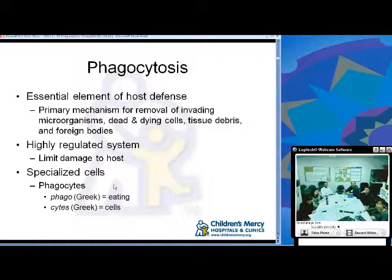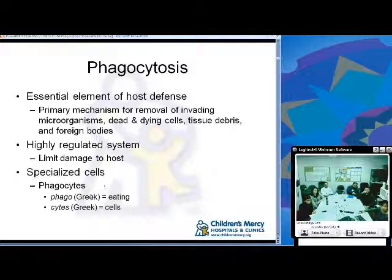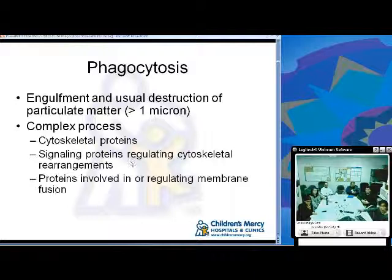Phagocytosis is an essential element of host defense. It's the primary mechanism for removal of invading microorganisms, dead and dying cells, tissue debris, and foreign bodies. It's highly regulated so that there's very limited damage to the host, and it involves specialized cells called phagocytes — phago for eating, cytes for cells. The definition is engulfment and destruction of particulate matter greater than one micron.